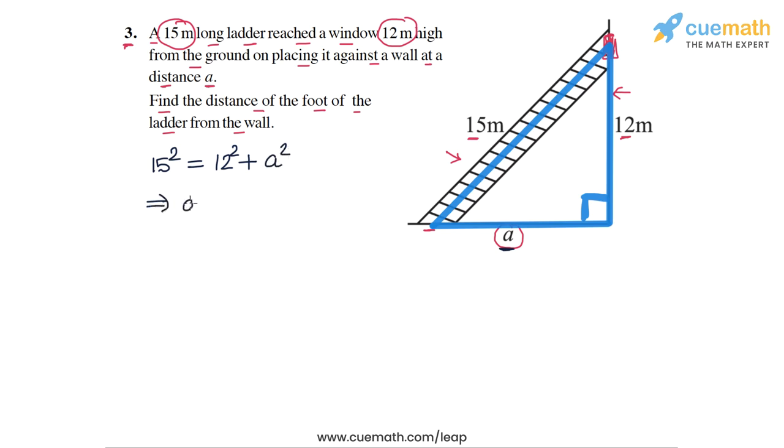So this gives us a square equal to 15 square minus 12 square. Now 15 square is 225 and 12 square is 144. So we get 225 minus 144 which is equal to 81.